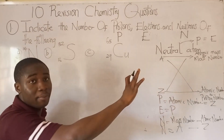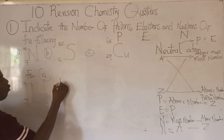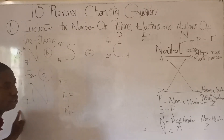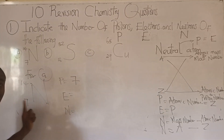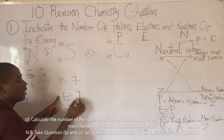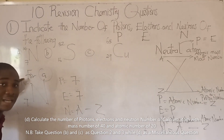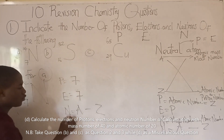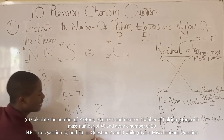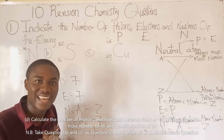Let's solve the first question; you solve the remaining ones and provide the answers in the comment section below. For A, which is N-14-7: the proton number comes from the value at the bottom, which is 7. It's a neutral atom, so the electron number also equals 7. For the neutron number, it is A minus Z: 14 minus 7 equals 7. So proton = 7, electron = 7, neutron = 7. You can see how questions like this are tackled without stress.